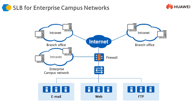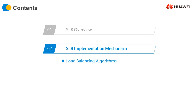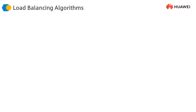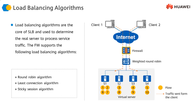Load balancing algorithms are the core of SLB — the heart and soul of the entire process. They are used to determine which real server processes the service traffic. The firewall supports three main load balancing algorithms: round robin, least connection, and sticky session.